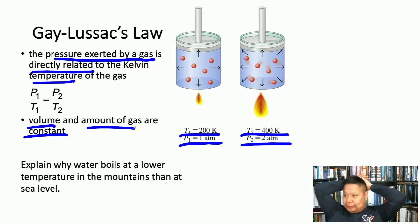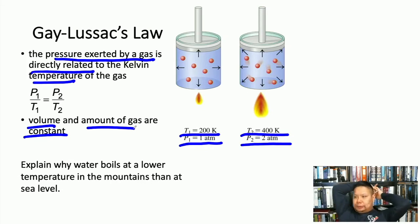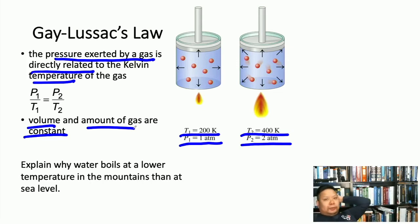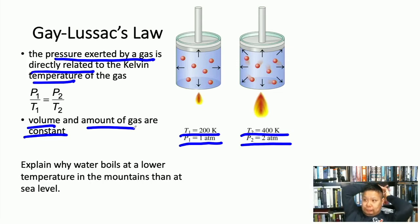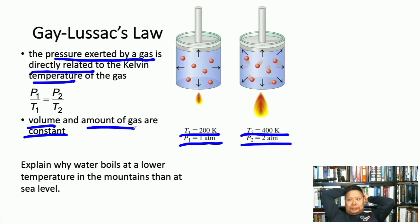Consider why water boils at a lower temperature in the mountains than at sea level. At sea level, water boils at 100°C. But as you increase altitude, there's less pressure above you, so you don't need as much energy to overcome the pressure on the water's surface — which is what must be overcome for water to boil.